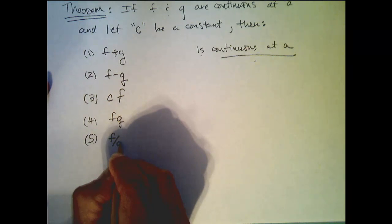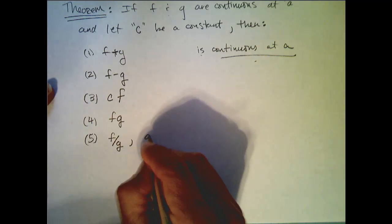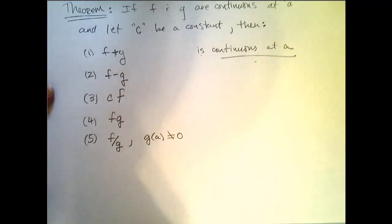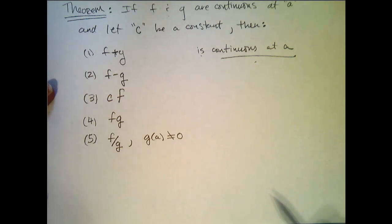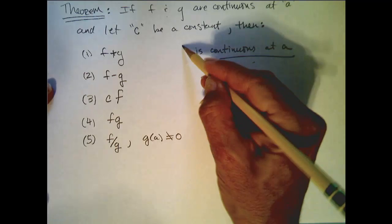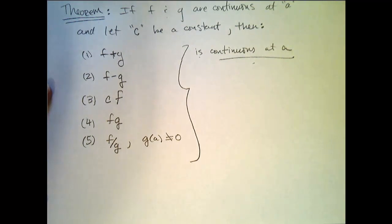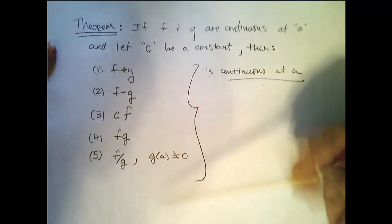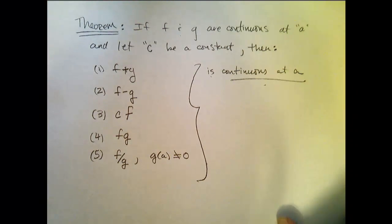And the quotient of continuous functions is continuous, provided that g of a is not 0. So g might be continuous on its own at a, but if it's 0 there, then it can't sit in the denominator of another function. So all of these are continuous at a, and you can verify these truths by applying your limit laws to the definition.